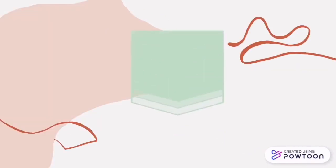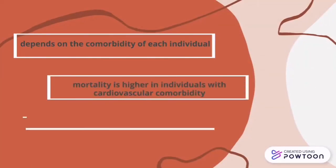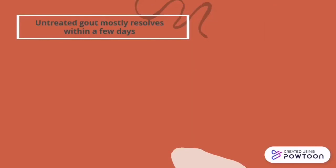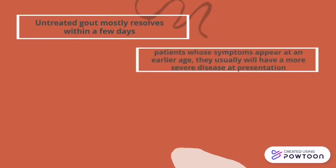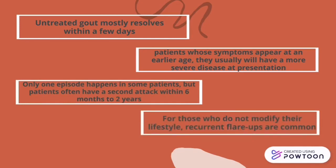For the prognosis of gout, it depends on the comorbidities of each individual. Mortality is usually higher in individuals with cardiovascular comorbidities, and gout can lead to chronic arthropathy, tophi deposition, and renal disease. Untreated gout attacks usually resolve within a few days. Patients whose symptoms appear at an earlier age will usually have a more severe disease presentation. Only one episode occurs in some patients; however, patients often have a second attack within 6 months to 2 years. Those who do not modify their lifestyle will commonly experience continued flare-ups.